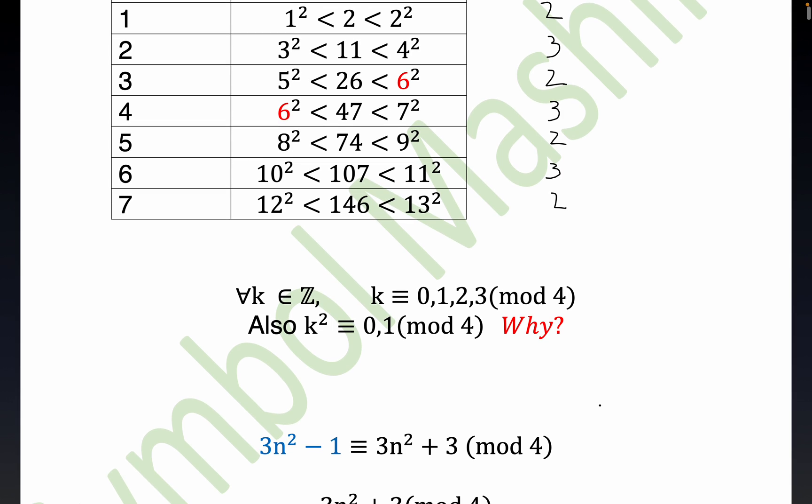Okay, now, so right here, this is true because notice what happens when you square 2. 2 squared is equal to 4, but that's certainly congruent to 0 mod 4. That's congruent to 0. Now I won't write down modulo.